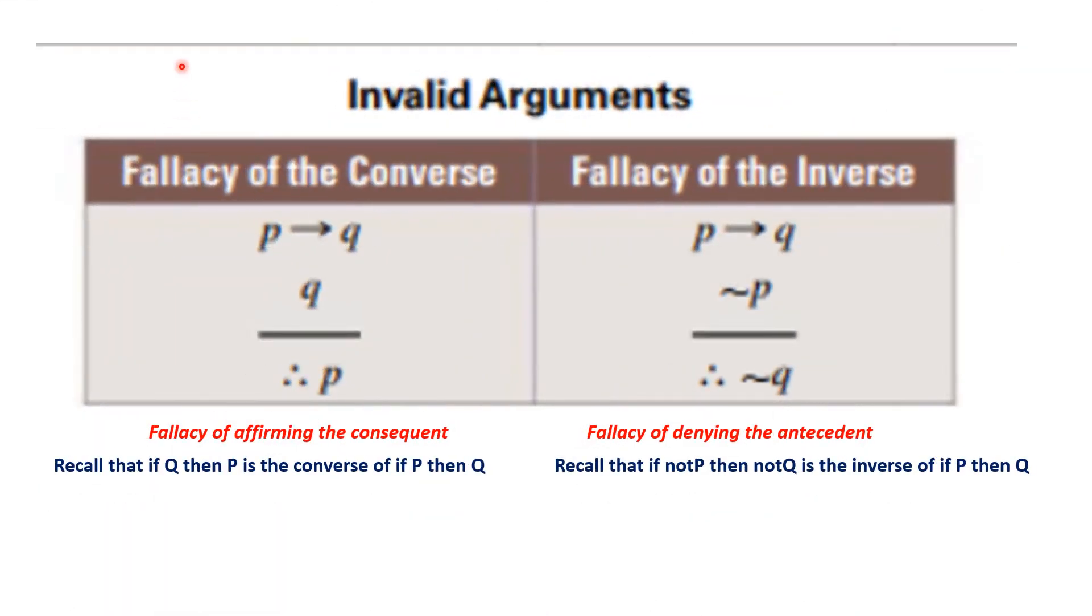Now in the same way that there were modus ponens, modus tollens, hypothetical syllogism that were valid argument forms, there also are some classical invalid argument forms. One of them is called the fallacy of the converse, that is, if P then Q, Q, therefore P. This is also called the fallacy of affirming the consequent. And recall that if Q then P is the converse of if P then Q.